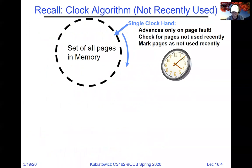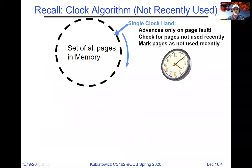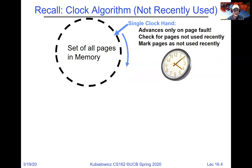The conclusion from the effective access time analysis was: we really can't afford page faults. If we have any significant number of faults, we'll burn all of our performance. That means it's really important to get your replacement policy correct so you keep the pages you care about in memory. We talked about the clock algorithm as a version approximating LRU — a single clock hand that advances only on page faults. When the hand advances, we check if the page has been used recently: if it has, we clear the use bit and move on; if not, we select it for replacement.